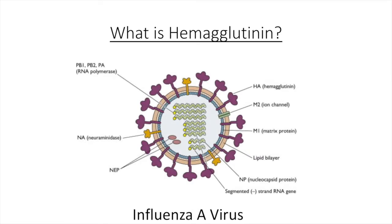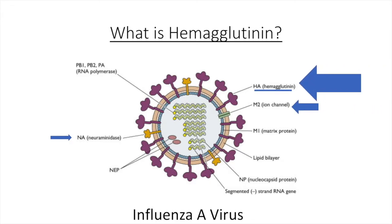Influenza A virus membranes contain three proteins: neuraminidase, the proton channel M2, and hemagglutinin. Hemagglutinin is an antigenic integral membrane glycoprotein found on the surfaces of influenza viruses. It stimulates the production of an antibody and is a class of protein that has carbohydrate groups attached to a polypeptide chain.